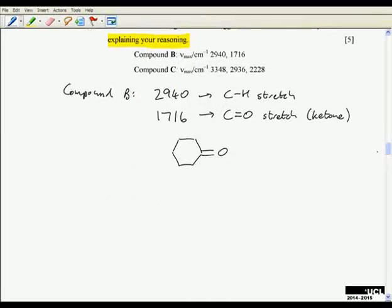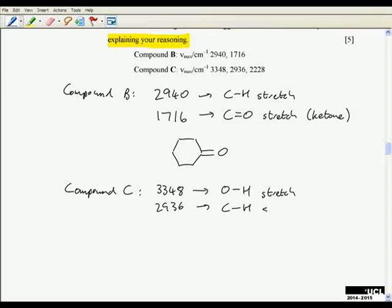Compound C: anything that's well above 3000 wave numbers is likely to be an O-H or an N-H. We've only got oxygen in this compound, no nitrogen, so it's got to be an O-H stretch. 2936 is always going to be a C-H stretch, and then 2228—that's in the region between the carbonyls at 1700 to 1800 and the C-H stretch at around 3000. This is a typical triple bond stretching region.